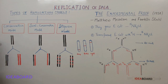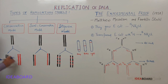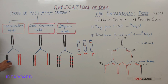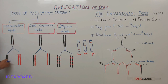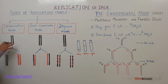Let us see what the conservative model says. This is the parent DNA, shown in black — the two strands. During replication, two daughter DNAs are formed. One daughter DNA is black, just like the parent DNA, and the other is red, representing the new daughter DNA. The parental DNA remained as it is, and one daughter has parental strands while the other has new strands. This model says the parental DNA is not utilized at all — that is why it is called the conservative model.